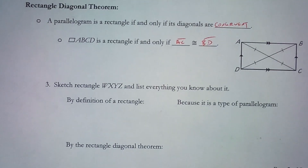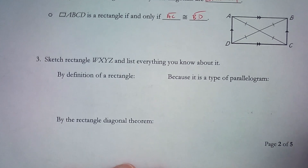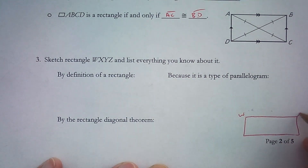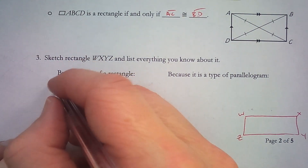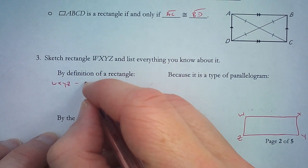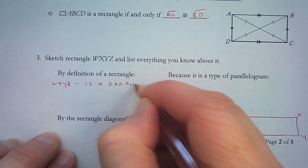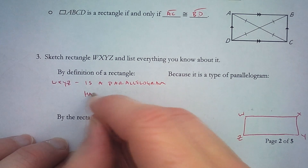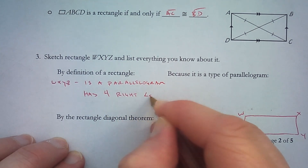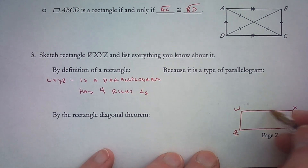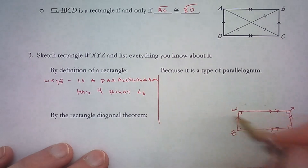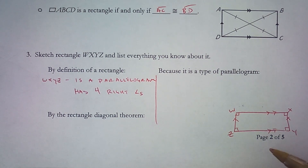We're going to sketch a rectangle, list all the properties we know about it, and then find some values. Here is rectangle WXYZ. By definition, first we need to state that it is a parallelogram. A rectangle is a type of parallelogram and, by definition, it has four right angles. So we have a parallelogram here which means opposite sides are parallel and it has four right angles.